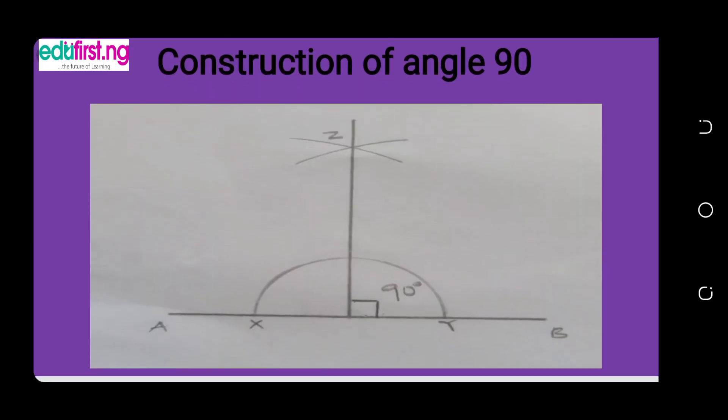Now let us see how we can construct angle 90. It is pretty easy — just pay attention and follow. The first thing you are going to do when constructing angle 90 is to rule a horizontal line, line AB. The length depends on the centimetre given, but in this case no specific length is given; we are only practising how to construct angle 90.